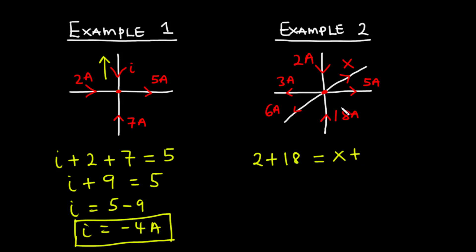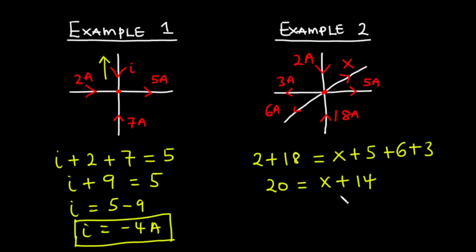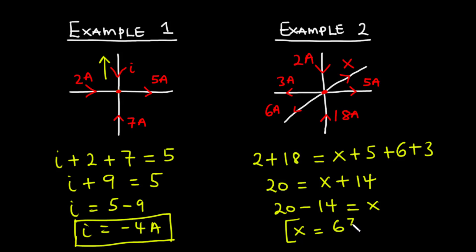We have 5 also leaving the junction, 6 leaving the junction, and 3 also leaving the junction. So now let's simplify further. 2 plus 18 is 20, and then 5 plus 6 is 11, and 11 plus 3 is 14, so we have x plus 14. To find the value of x, we transpose 14 to the left hand side, so we have 20 minus 14 equals x, and 20 minus 14 is equal to 6 amperes leaving the junction.